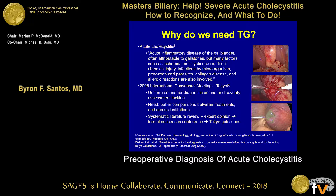The Tokyo Guidelines consensus meeting involved a prior systematic literature review supplemented by expert opinion. There was not always great level-one evidence for these guidelines. There was then a formal consensus conference with surgeons, members of the public, and voting. And ultimately, that's how the Tokyo Guidelines were formed.